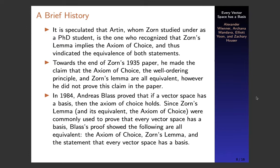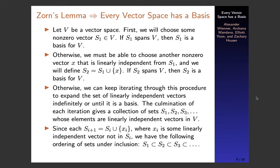Artin, under whom Zorn studied as a PhD student, recognized that Zorn's Lemma implies the Axiom of Choice and vindicated the equivalence of both, although in Zorn's 1935 paper he claimed the Axiom of Choice, the well-ordering principle, and Zorn's Lemma are all equivalent without proving the claim. Then in 1984, Andreas Bloss proved that if a vector space has a basis, then the Axiom of Choice holds — showing that the Axiom of Choice, Zorn's Lemma, and the statement that every vector space has a basis are all equivalent.